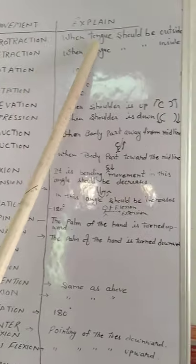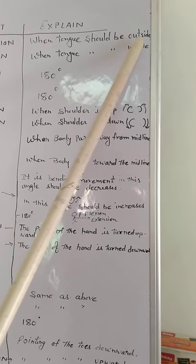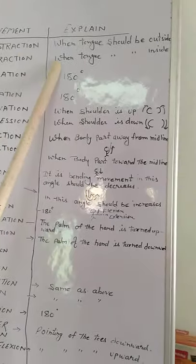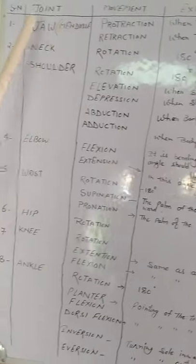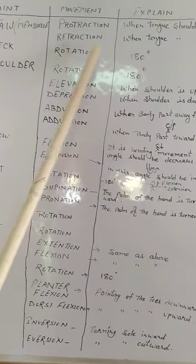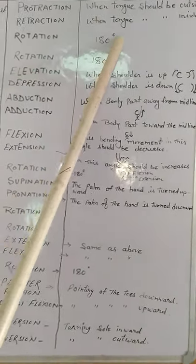Protraction means when tongue should be outside and retraction means opposite of protraction, when tongue should be inside. Second is neck joint. Neck joint rotation, where 180 degree angle is there.